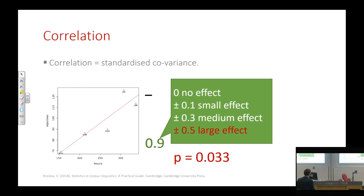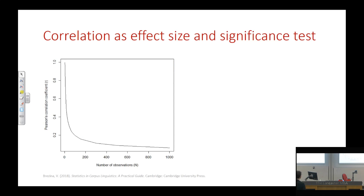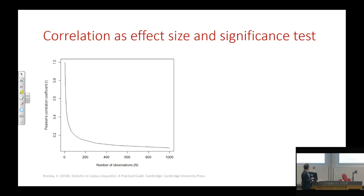If the tendency is really clear, like the relationship between nouns and adjectives, it is enough to have just a few points to get a strong significant correlation. This illustrates the relationship between effect size and significance — when we report correlation, we need to report both. The graph shows on the x-axis the number of observations, and on the y-axis the correlation value R, which ranges from 0 to 1.